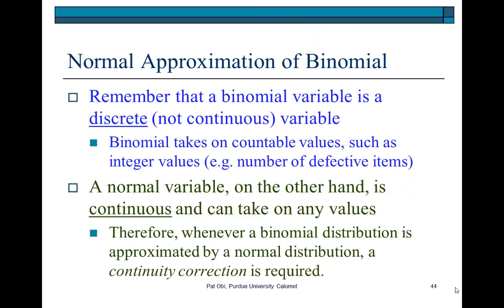Now though, be careful to note that this is only an approximation because binomial variables are discrete, while normal distribution is for continuous variables, which are variables that can take on any values.